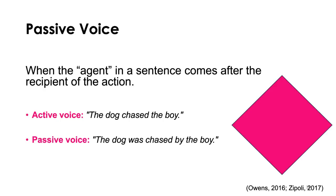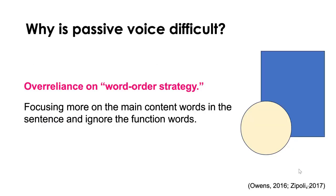Passive voice is when the agent in a sentence comes after the recipient of the action. For example, instead of saying 'the dog chased the boy,' we say 'the dog was chased by the boy.' It's a little harder to process. When you're reading something with a lot of passive voice, you might be more likely to have comprehension breakdowns. This can be difficult for people with disabilities that impact language, as well as people who are learning English.